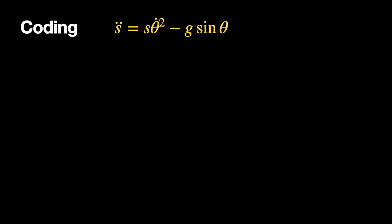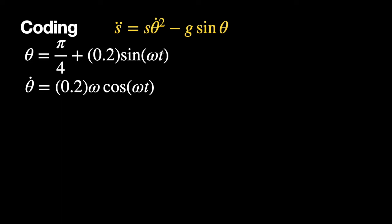Here is the tilting bead problem — I'll link it below. I derived this with the Lagrangian and implemented it in Python. The equation from the Lagrangian is: S-double-dot, the position up the rod, equals S times theta-dot squared minus g times sine-theta. Theta is the angle, theta-dot is the rate the rod is tilting. I have theta oscillating back and forth with some angular frequency, and I need its derivative theta-dot, which appears in the expression for S-double-dot.